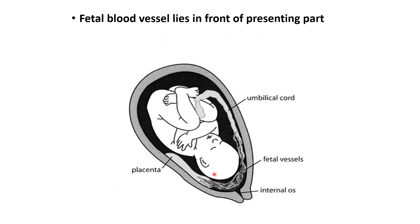Looking at the picture: this is the presenting part and this is the fetal blood vessel. The placenta is attached here and from the placenta, the blood vessels are going to the baby. These blood vessels are lying in front of the presenting part, above the internal os of the cervix. This condition is known as Vasa Previa — blood vessels lying in front of the presenting part.